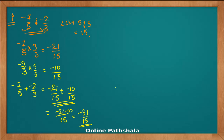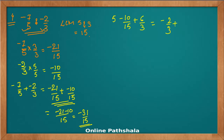Let's take one more example with different denominators: minus 10 by 15 plus 6 by 3. We can first reduce minus 10 by 15 by dividing numerator and denominator by 5 to get minus 2 by 3. Now we have minus 2 by 3 plus 6 by 3. With the same denominator, minus 2 plus 6 gives 4, so the answer is 4 by 3.